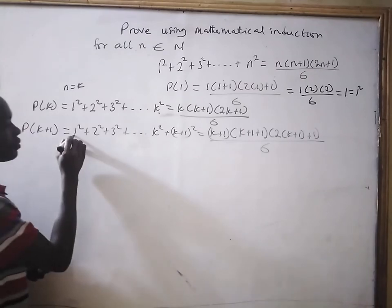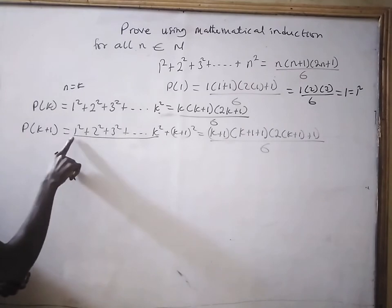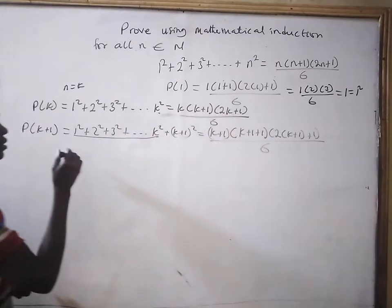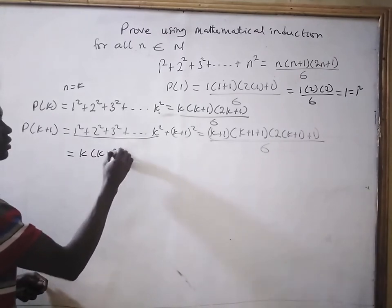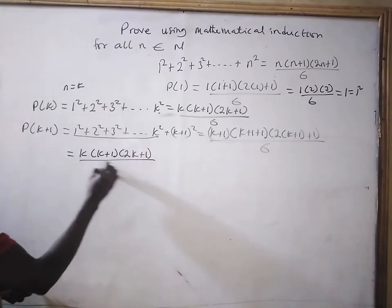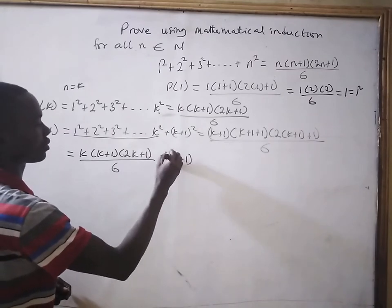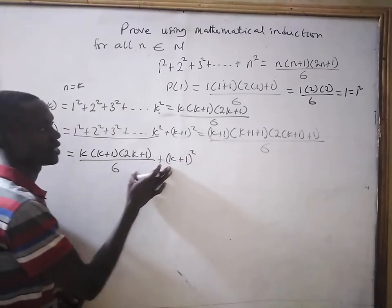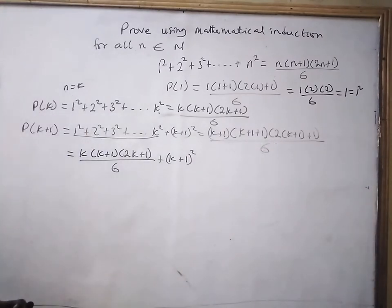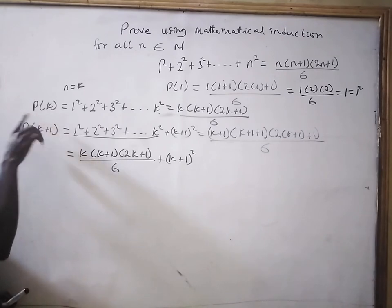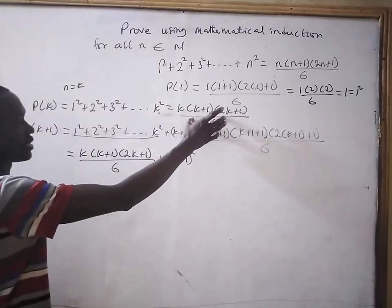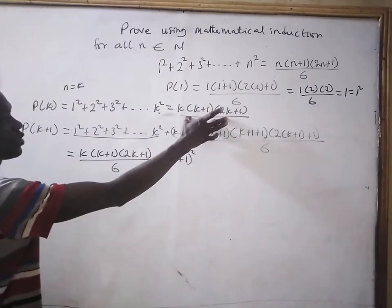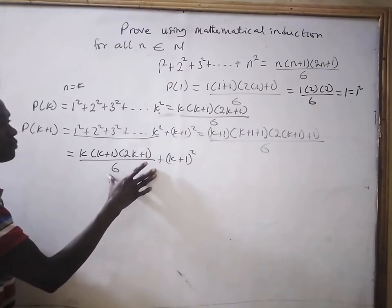Now, we have this summation already. If we sum from 1 squared to k squared, we are going to get this from our hypothesis. So, it implies that P(k+1) equals k times (k plus 1) times (2k plus 1) all divided by 6, plus (k plus 1) squared. And we need to prove that this sum is equal to the required expression.